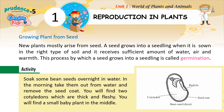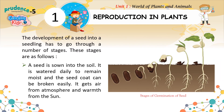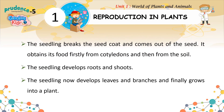Activity: Soak some bean seeds overnight in water. In the morning, take them out and remove the seed coat. You will find two cotyledons which are thick and fleshy, and a small baby plant in the middle. The stages of germination are: a seed is sown into the soil and watered daily to remain moist; it gets air from the atmosphere and warmth from the sun; the seedling breaks the seed coat and comes out; it obtains food first from cotyledons, then from the soil; the seedling develops roots and shoots, then leaves and branches, and finally grows into a plant.